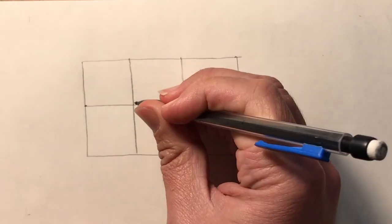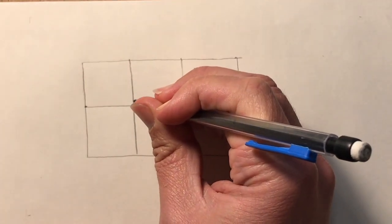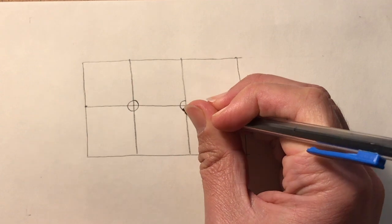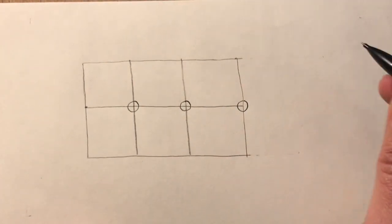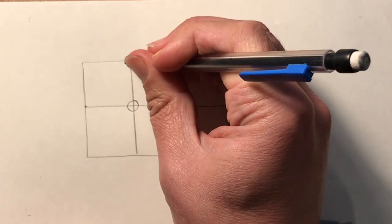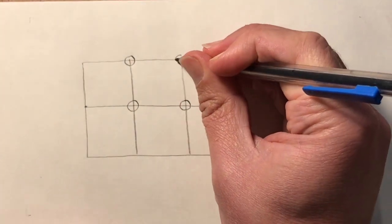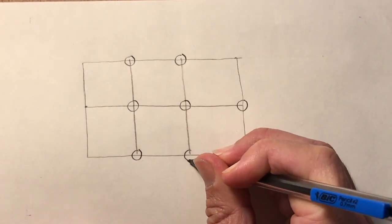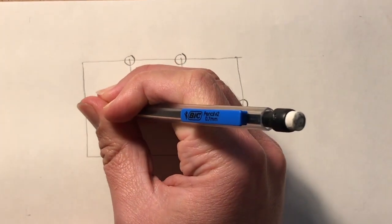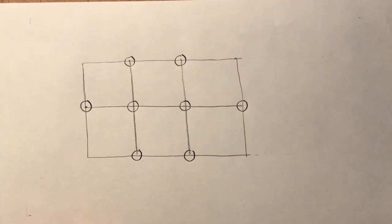Okay so now we're going to put little circles or big circles, doesn't matter, at all the intersections. Now the smaller the circle the thicker the knot. The bigger the circle the thinner the width of the knot will be. You want the circles to all be the same size. I'm trying to make them about the same size.